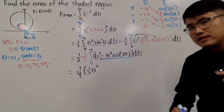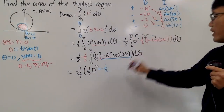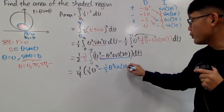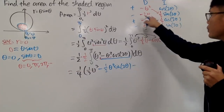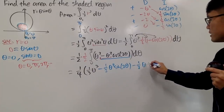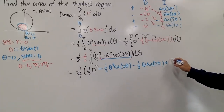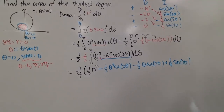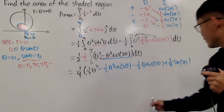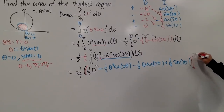Collecting the results: we get negative (1/2)theta squared times sin 2 theta, minus (1/2)theta times cosine 2 theta — since negative 2 times (1/4) is (1/2) — plus (1/4)sin 2 theta, since 2 times (1/8) is (1/4). So this is our full antiderivative expression, and we now evaluate from 0 to pi.